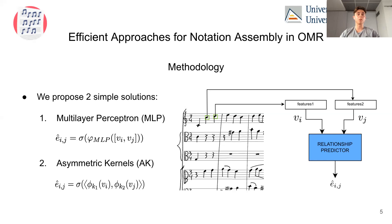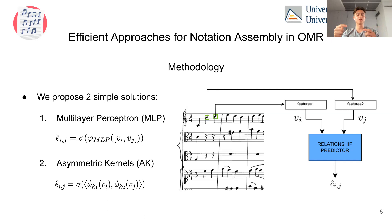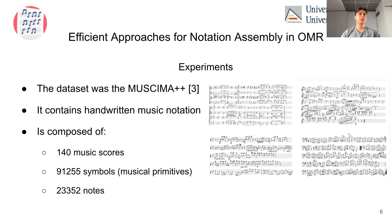Moving on to our methodology, we propose two simple solutions. The first one is a multi-layer perceptron in which the features are concatenated and then followed by a sigmoid to predict whether there is a relationship or not. The other one is the use of asymmetric kernels in which a dot product is applied to two different Hilbert spaces — the features of the nodes are mapped to two different Hilbert spaces and then we check if there is a relationship with a dot product.